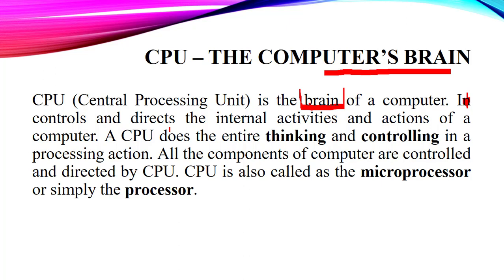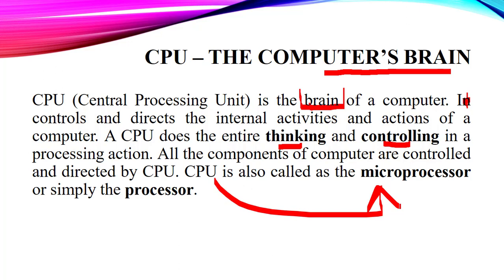A CPU does the entire thinking and controlling in a processing action. It will take all the decisions and control everything when it is processing a task. All components of the computer are controlled by the CPU. This CPU is often called a microprocessor. The processor chip that we have in our computer system is termed as the CPU — that chip in the circuit board is our processor or microprocessor, while the circuit board itself is the motherboard.